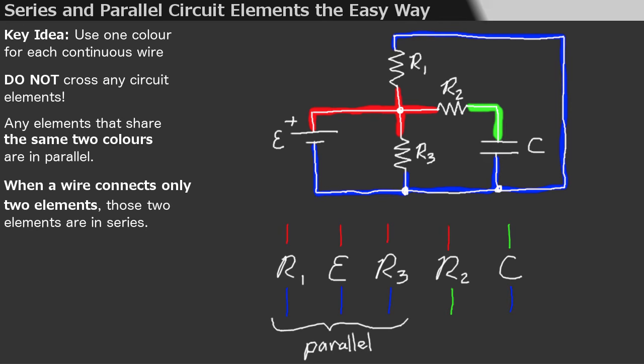The green wire is connected to R2 and the capacitor. That's only two elements, and they are in series. The blue wire is connected to R1, the capacitor, R3, and the EMF. These elements are not in series. Easy peasy.